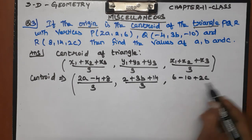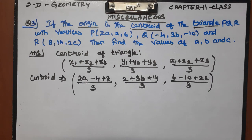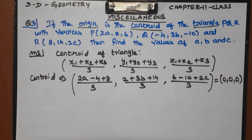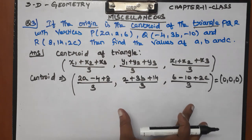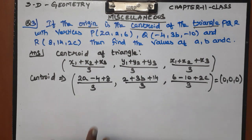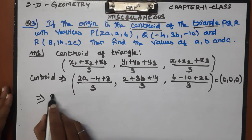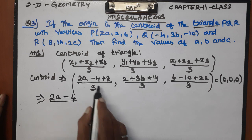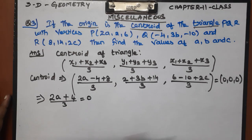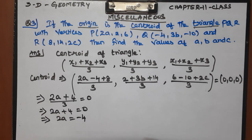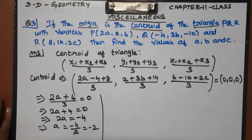Then 6 minus 10 plus 2c, divided by 3. The centroid is equal to the origin. Applying the centroid formula: x1, y1, z1. This implies a equals minus 4 divided by 2, equal to minus 2.